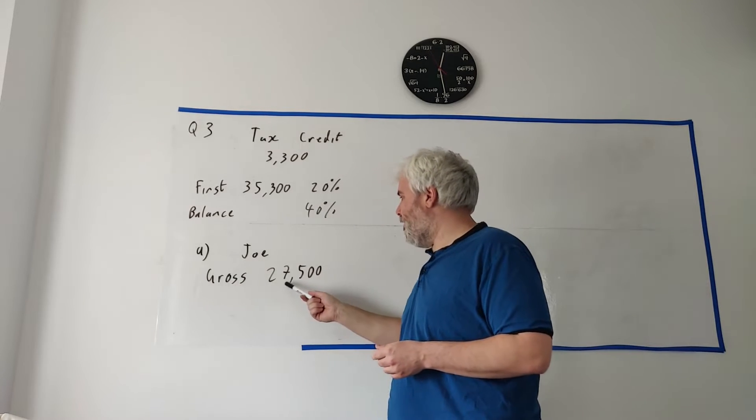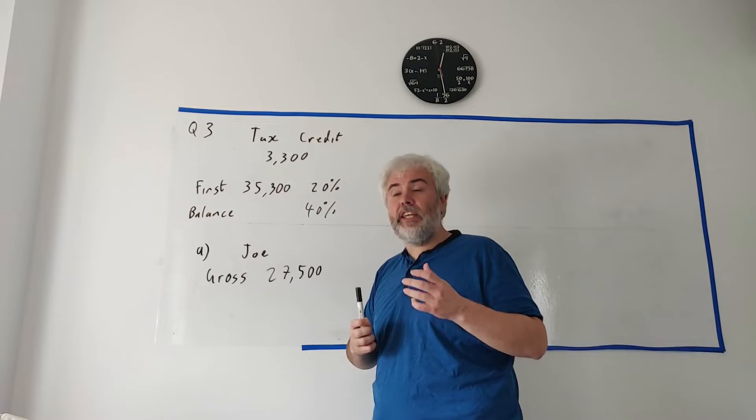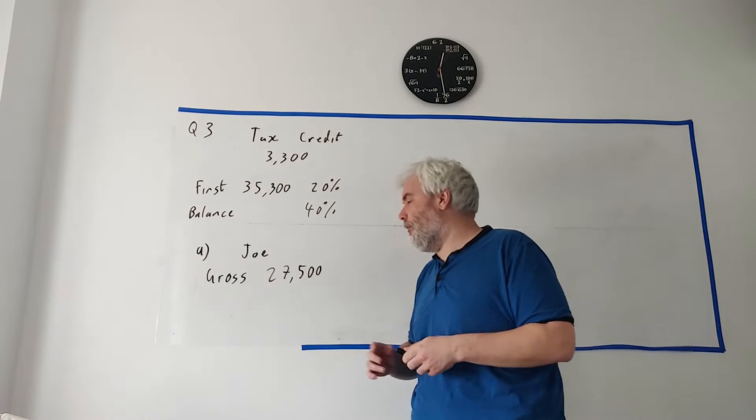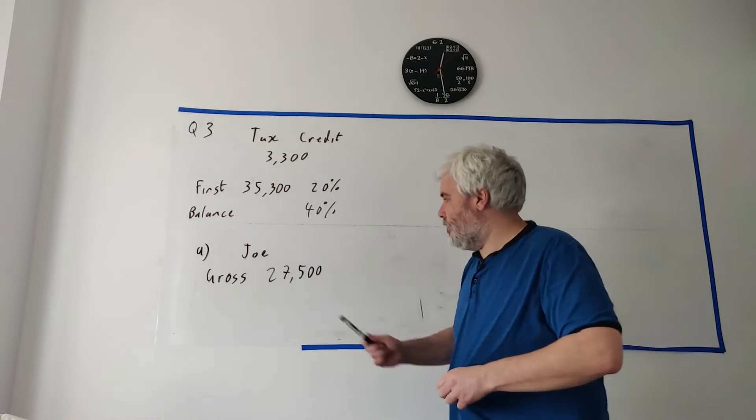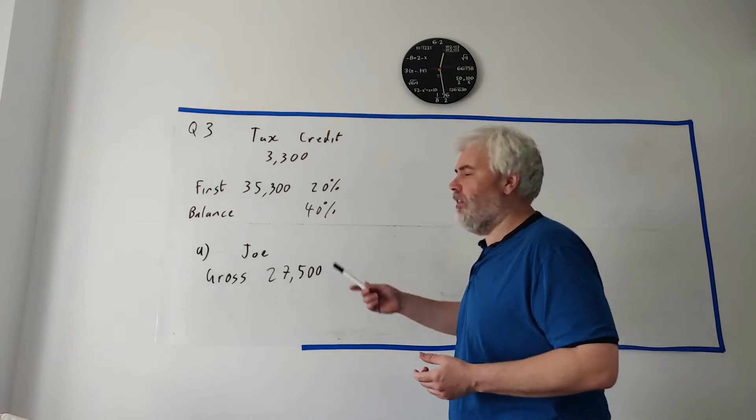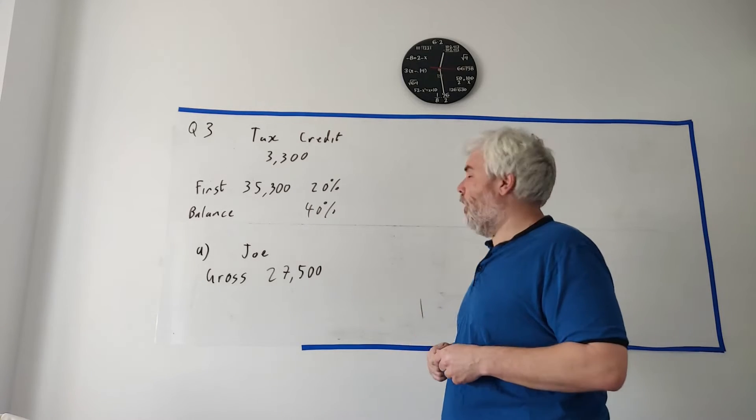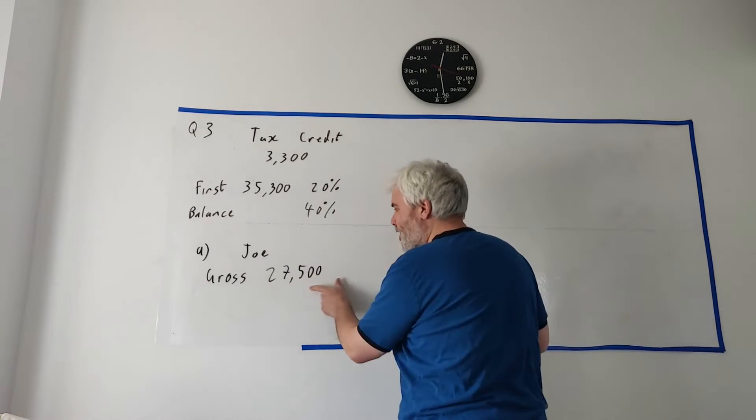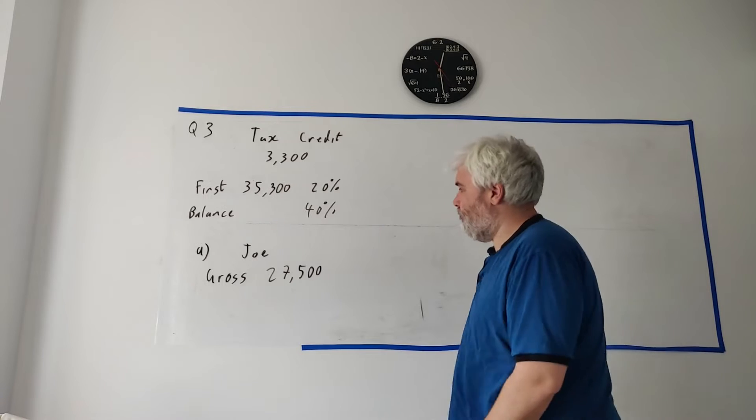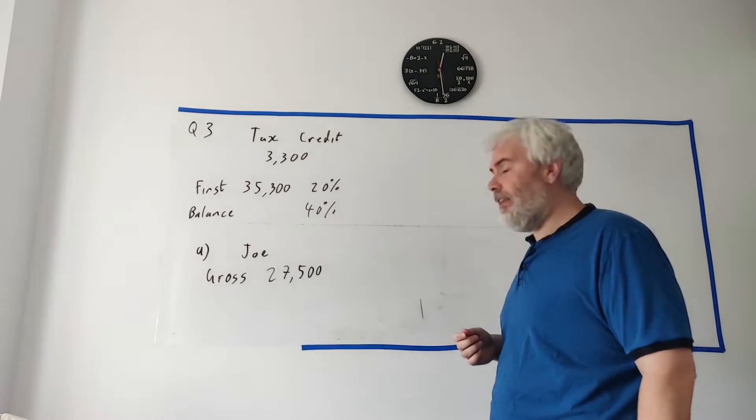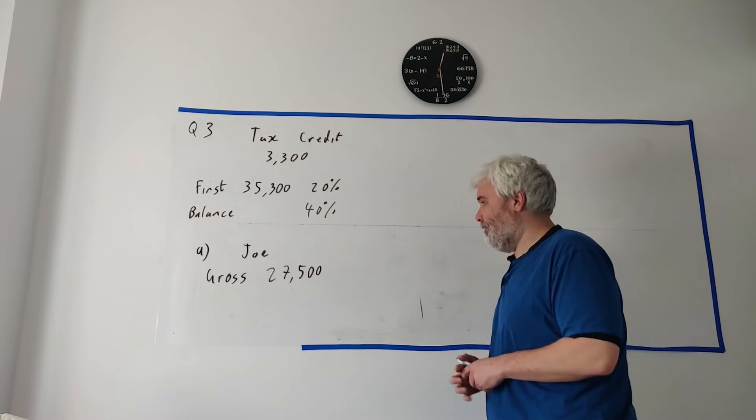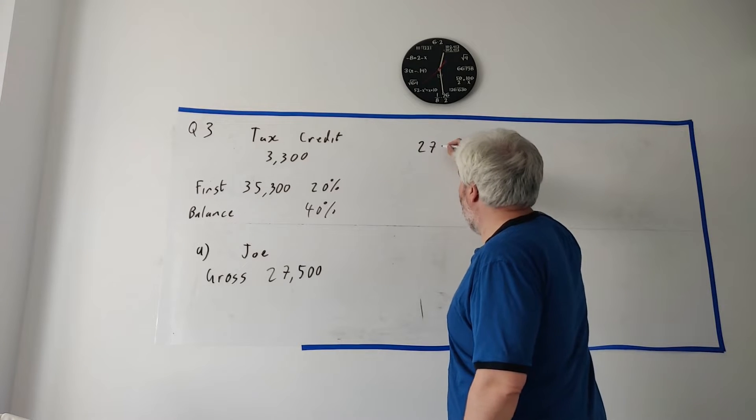He earns 27,500 gross. Again you need to remember what gross and net means. A bit of practice, a bit of study, you will get this. It's not so hard, I promise. Gross is 27,500. Now they also tell you he only pays the lower tax rate. Well we know that. 27,500 is less than 35,300. So he's only paying 20%. So how do we work out his net?